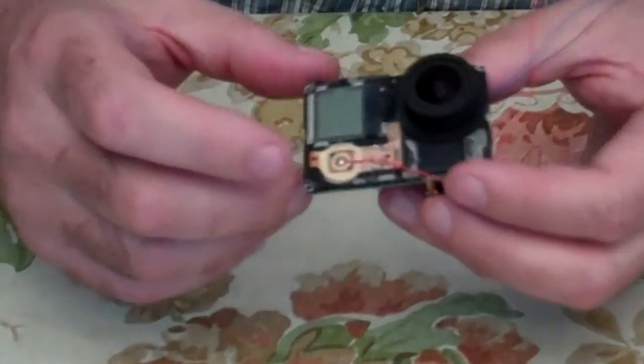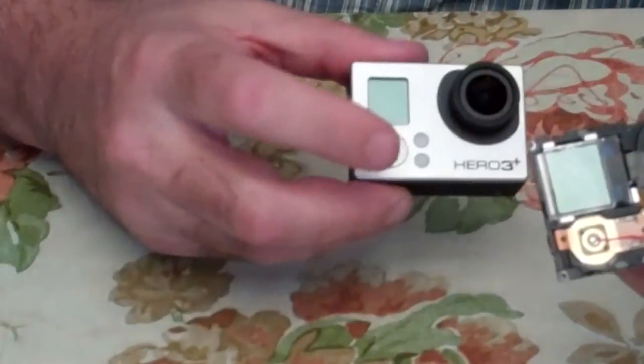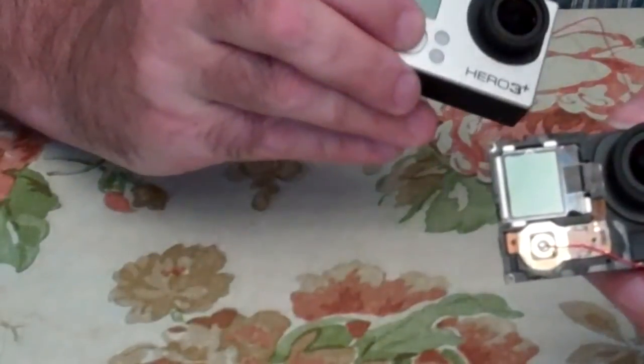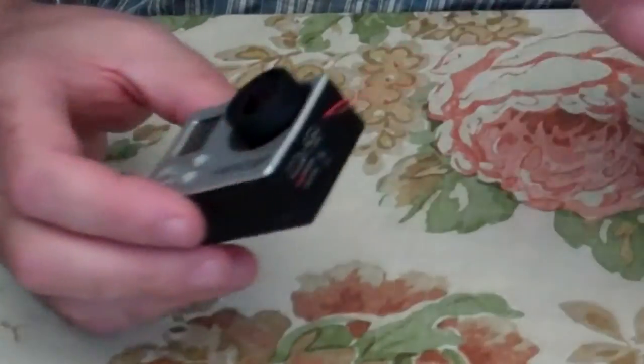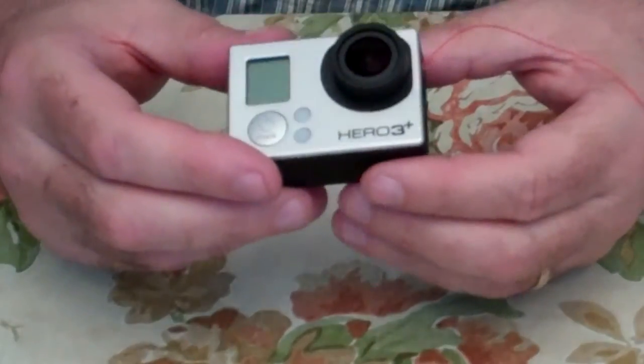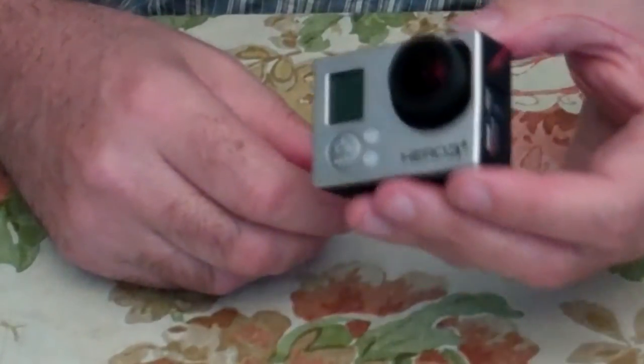Last but not least, just a quick reminder, your power button is not going to work anymore because we wired to the top of it. So, don't expect your power button to work. Thank you for watching this video on how to modify a GoPro Hero 3 Plus to add a hardwired power and shutter switch.